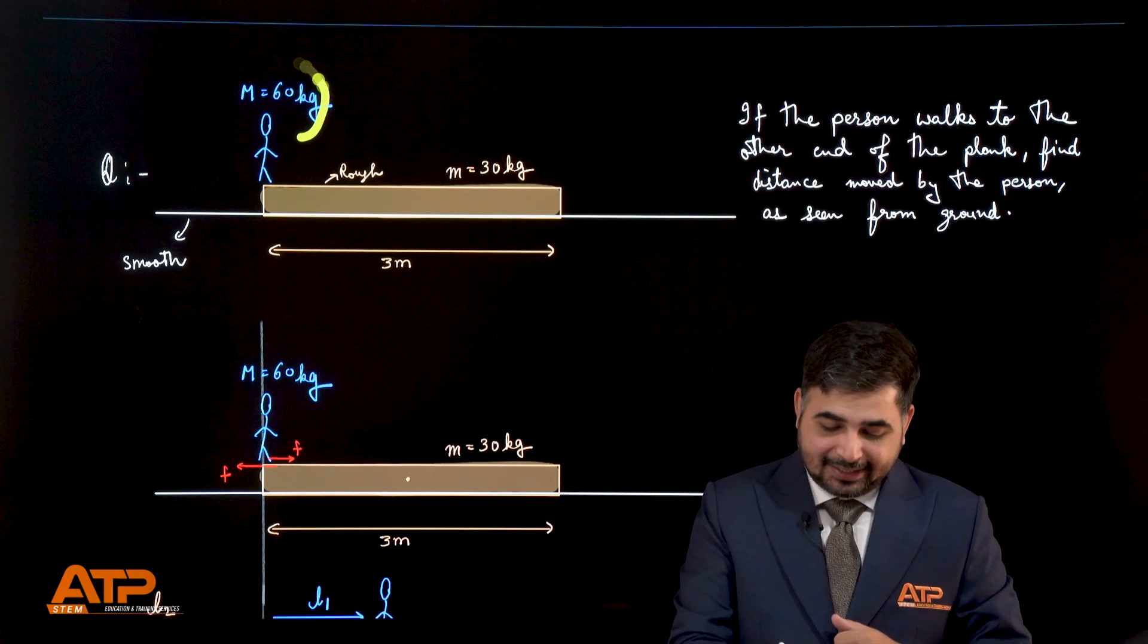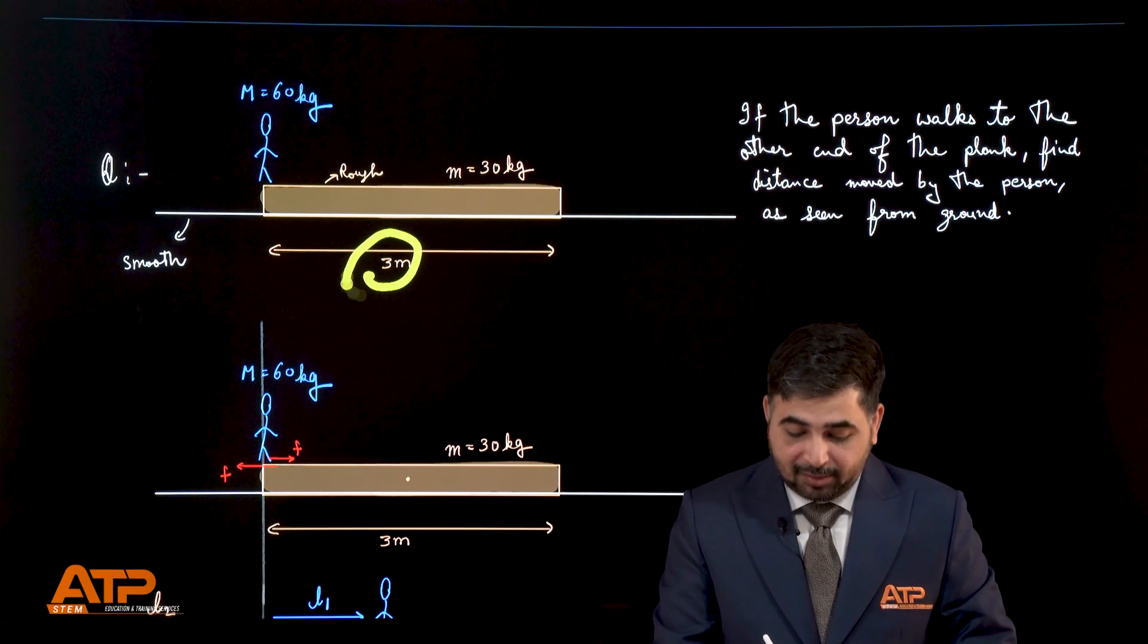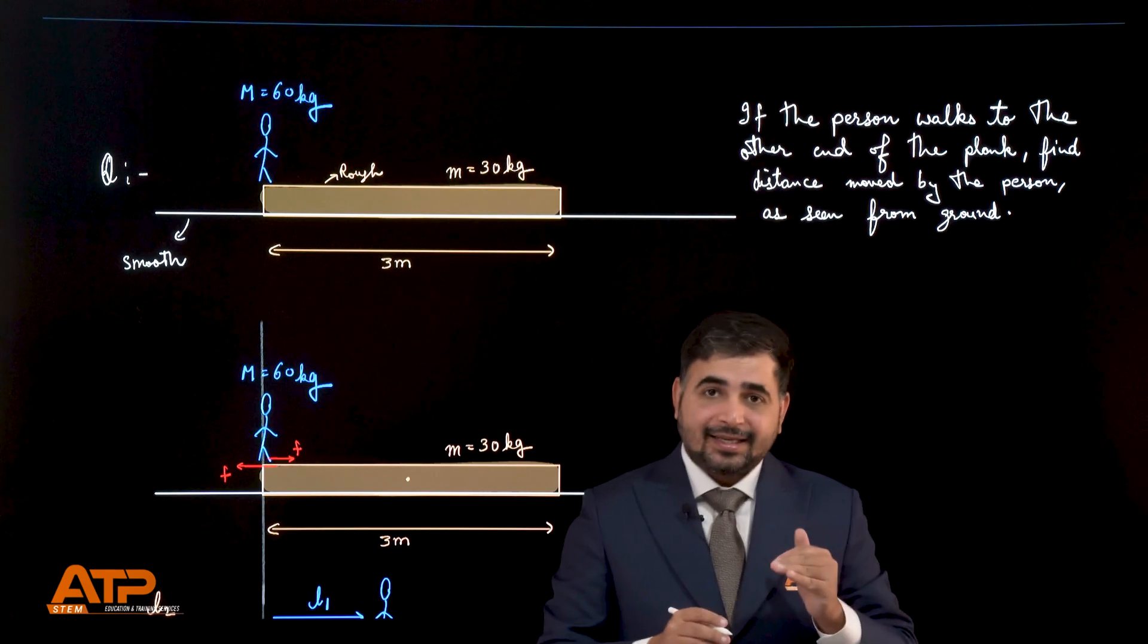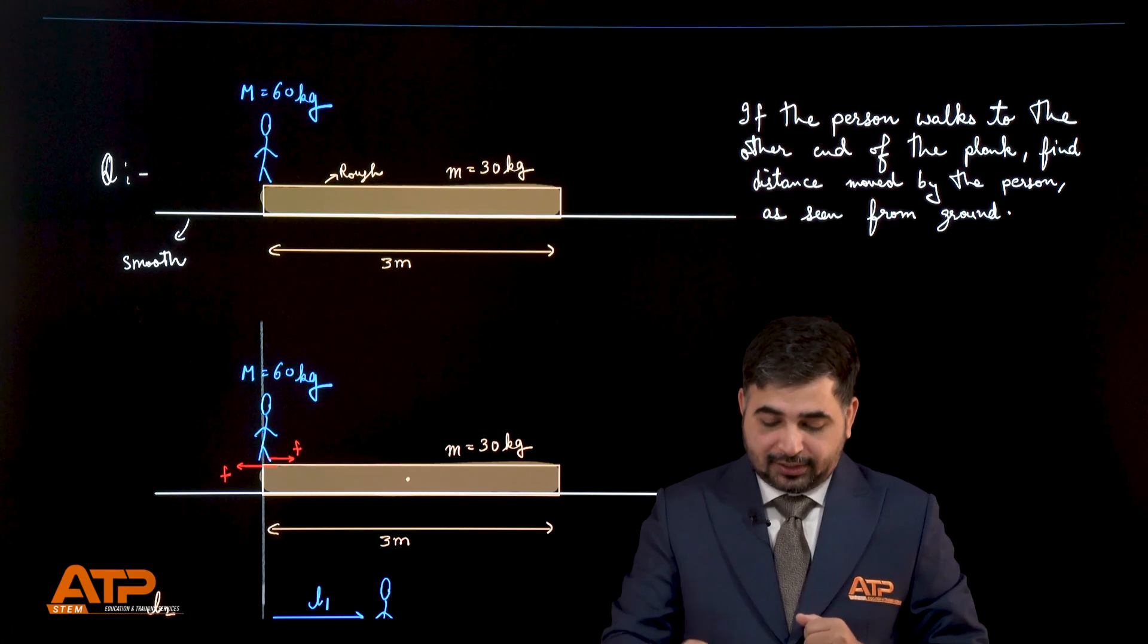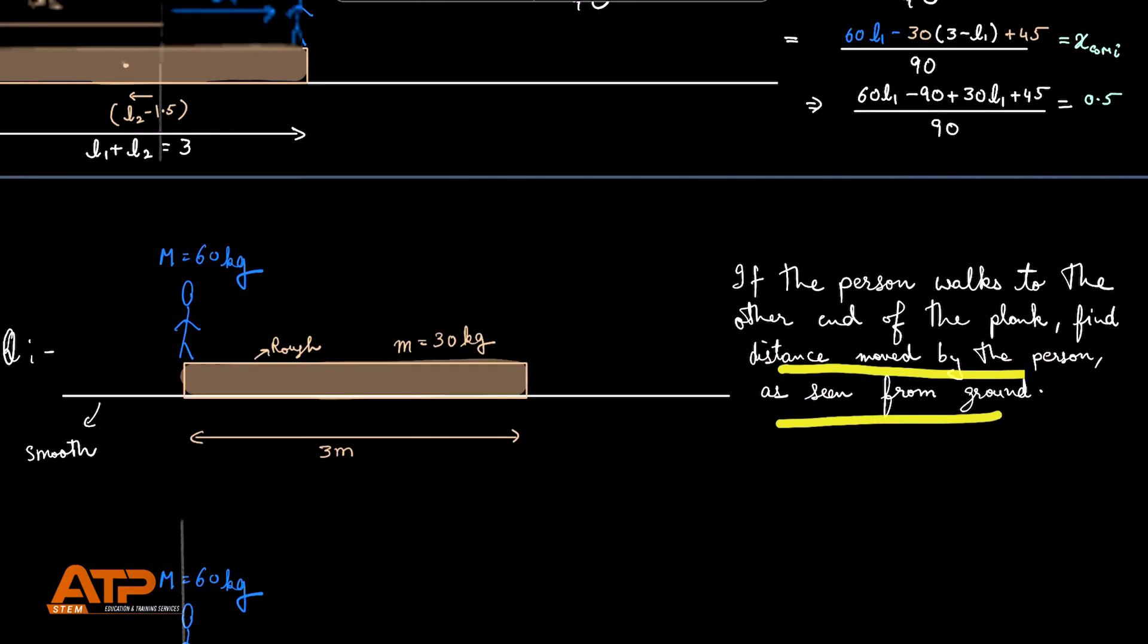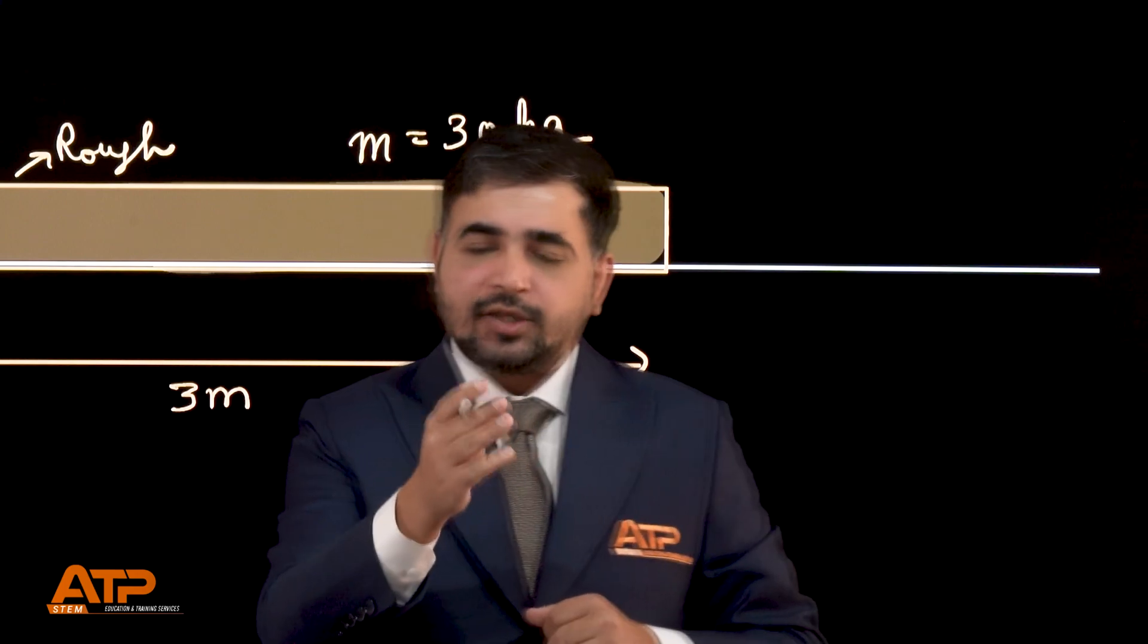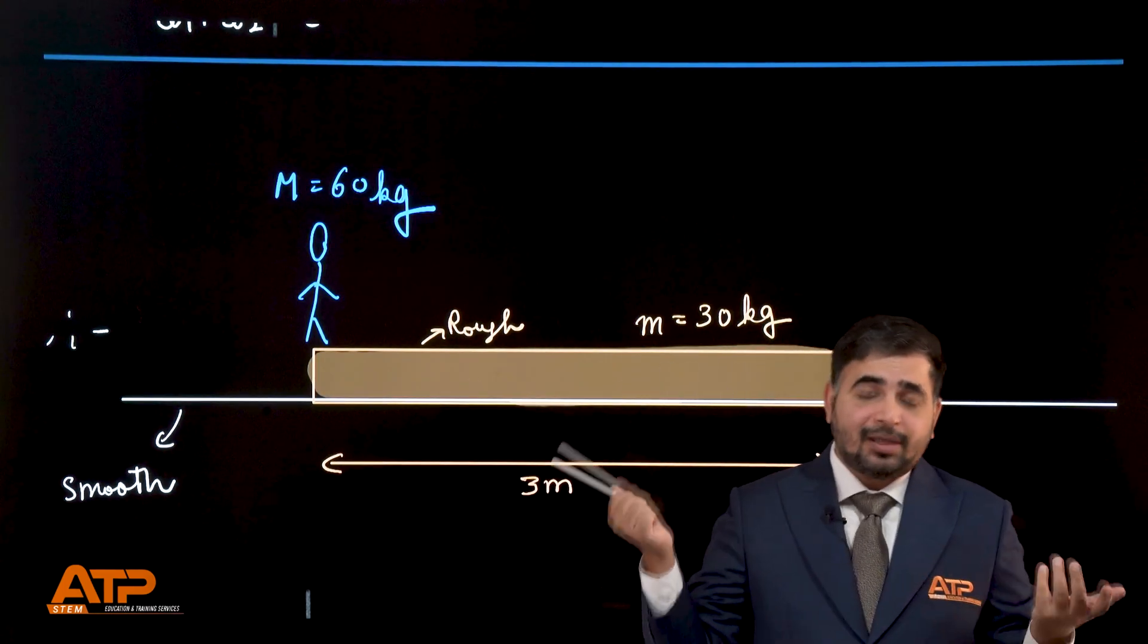So here there is a 60 kg person standing on a rough plank. The plank's length is 3 meter, mass of the plank is 30 kg but the plank is placed on a frictionless smooth surface. The question is if the person walks to the other end of the plank, find the distance moved by the person as seen from the ground. Why is this even a question? If the person has to walk to the other side, shouldn't the person simply move 3 meters?